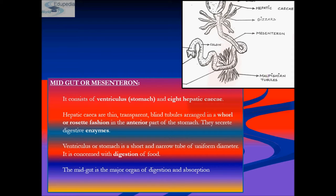The gastric caeca secrete digestive enzymes. The midgut consists of the ventriculus (stomach) and bears around eight hepatic caeca — four pairs — which are thin, transparent, blind tubules arranged in a rosette fashion at the anterior part of the stomach. The ventriculus is a short and narrow tube of uniform diameter concerned with digestion.